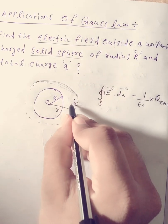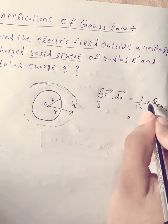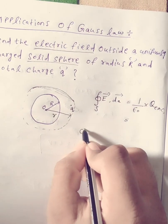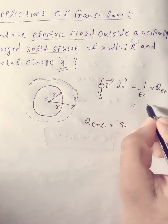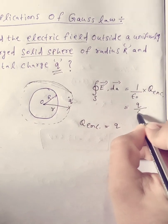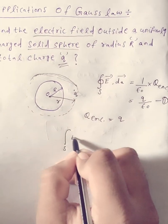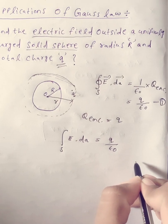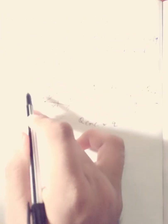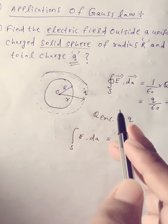The total charge enclosed by that Gaussian surface is Q, so I can write Q-enclosed as Q as given in the question. The equation becomes: the surface integral of E dot dA equals Q by epsilon-0. This is Equation 1. The imaginary sphere is my Gaussian surface, and the electric field is radially outward.